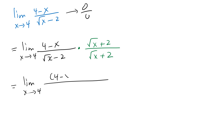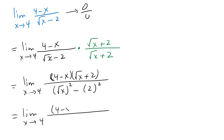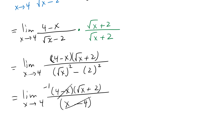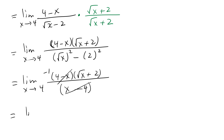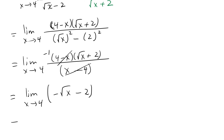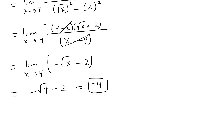On the top you get (4 − x)(√x + 2). In the denominator you do (√x)² − 2², which gives x − 4. Notice (4 − x) and (x − 4) cancel each other with a negative sign — they are opposites. So we calculate the limit of the resulting expression by substituting, giving negative (√4 + 2) = −(2 + 2) = −4.